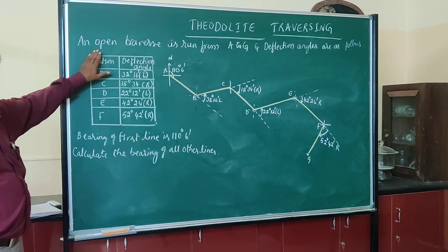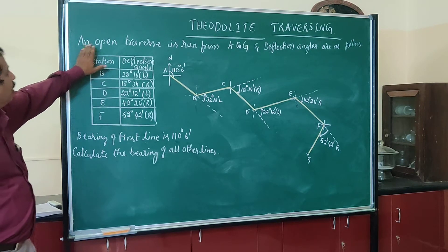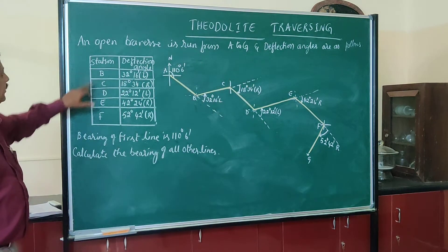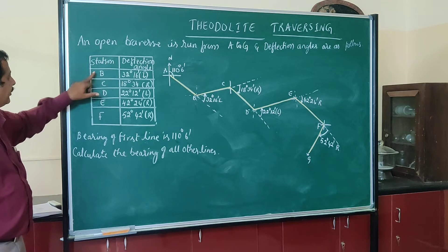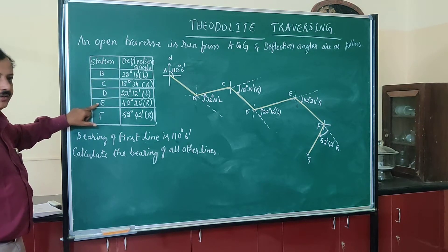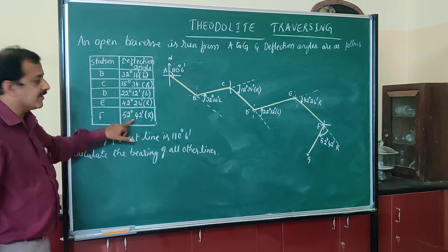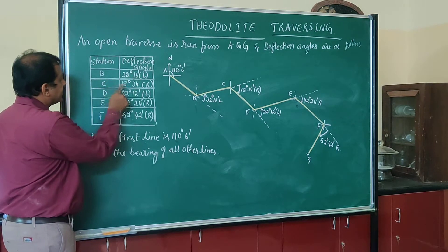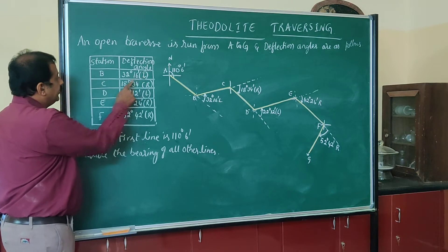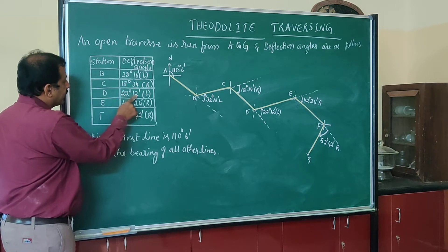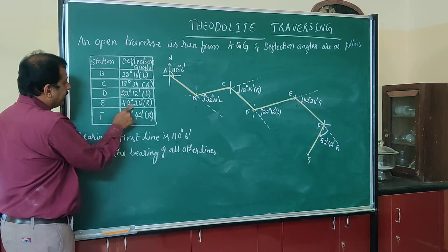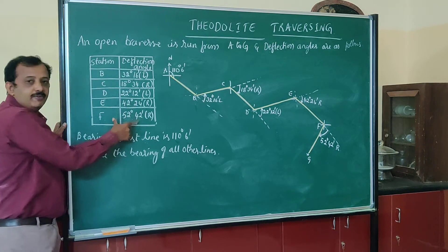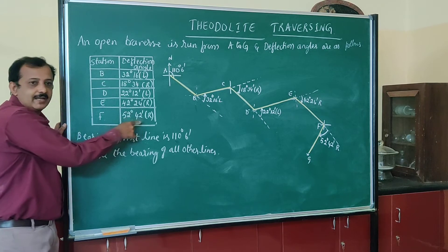This is a problem on open traverse, run from A to G. The station points are B, C, D, E, and F, with deflection angles as follows: at station B, 32 degrees 16 minutes to the right; at C, 18 degrees 34 minutes to the right; at D, 22 degrees 12 minutes to the left; at E, 42 degrees 24 minutes to the right; and at F, 52 degrees 42 minutes to the right. These are the deflection angles given, with their directions.